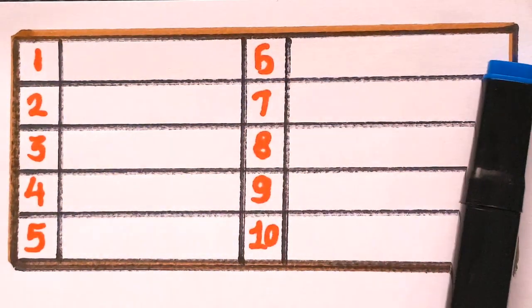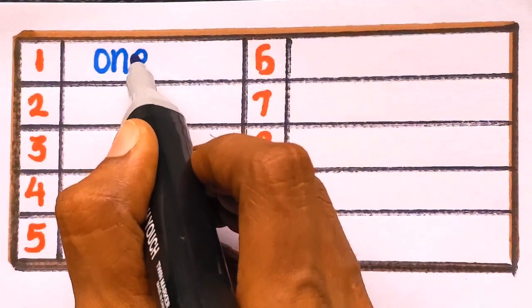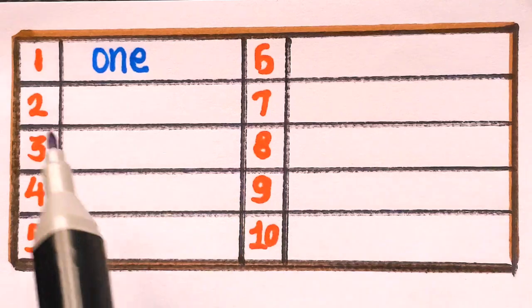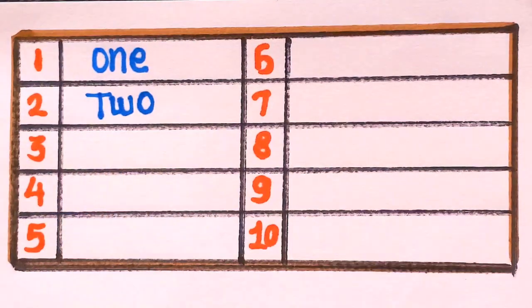So, let's get started. At first, number 1. O-N-E. One. Number 2. T-W-O. Two.